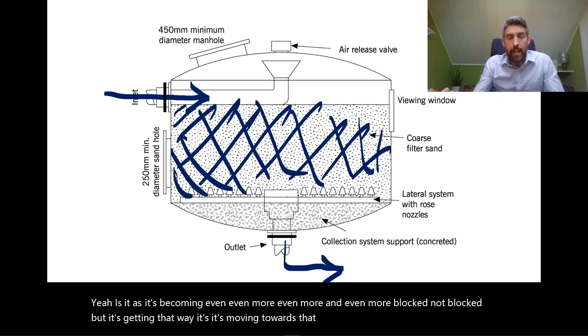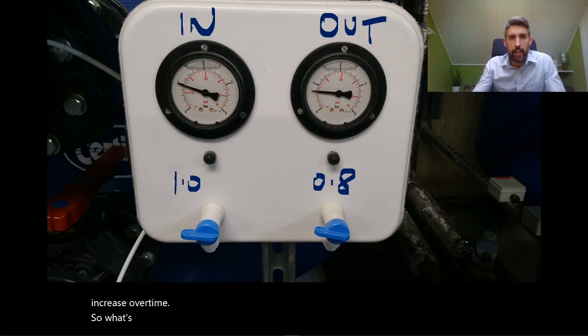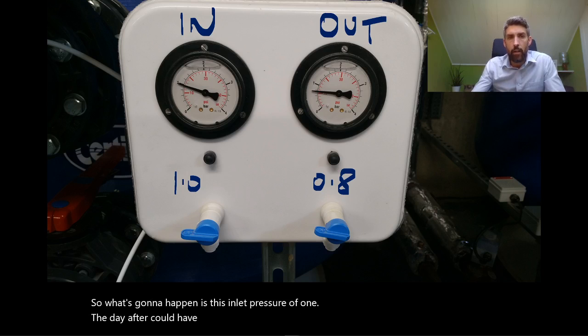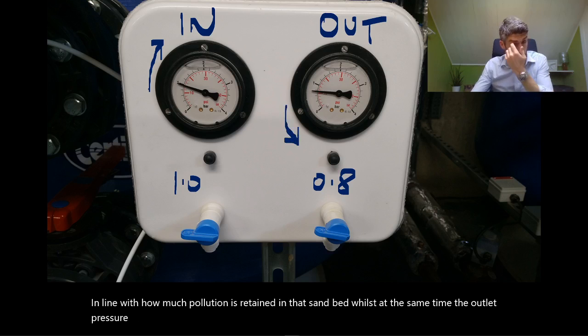The inlet pressure is going to increase over time. What's going to happen is this inlet pressure of one, the day after could have increased to 1.1 because the needle is going to move that way in line with how much pollution is retained in that sand bed. Whilst at the same time, the outlet pressure will move in that direction, so a pressure differential is going to open up.